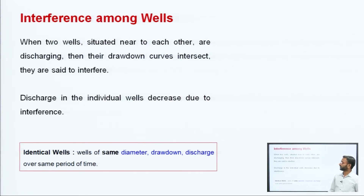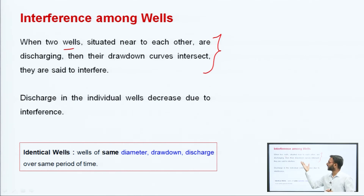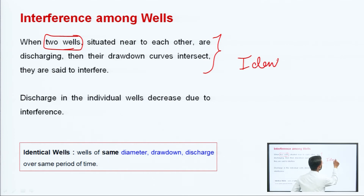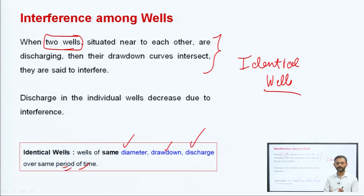Now let us talk about the interference among wells. When two wells are situated near to each other and are discharging, their drawdown curves intersect and they are set to interfere. We have seen this in diagrams multiple times when we discussed multiple wells and image wells — superimposition type. The discharge in individual wells decreases due to interference. We always talk about identical wells for superposition — identical wells matlab ki unka diameter same ho, drawdown same kare, aur discharge bhi same ho over the same period of time.